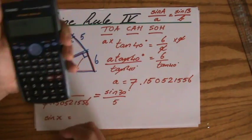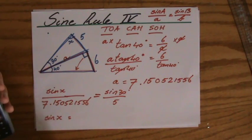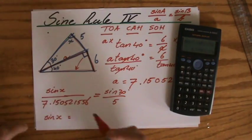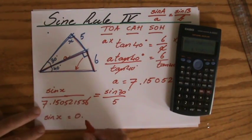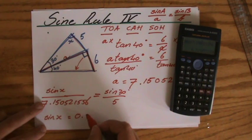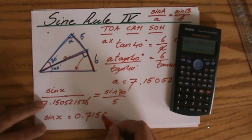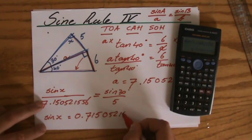The sine of 30, I'll do it a little bit quicker, divided by 5, times 7.150521556, all right. I was saying, did you see what I did? I rearranged this, so I multiplied both sides by my denominator here to make X the subject: 0.715021556.